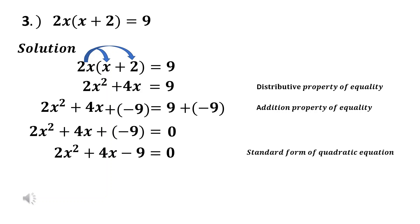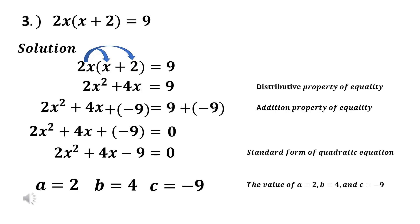Now we identify the value of a, b, and c. The value of a is 2, the value of b is 4, and the value of c is negative 9. That is how you transform the given equation and also identify the value of a, b, and c.